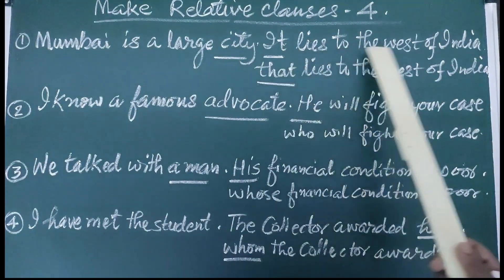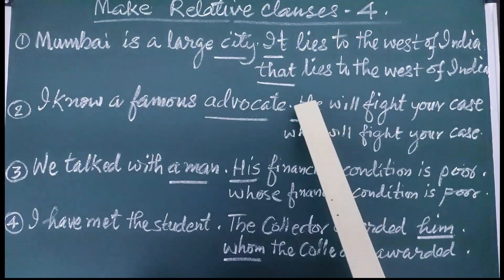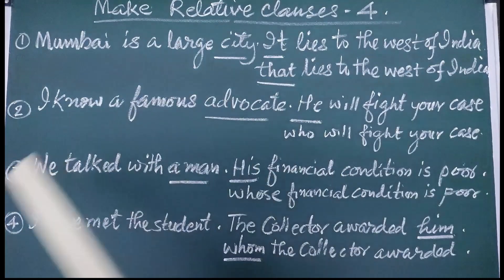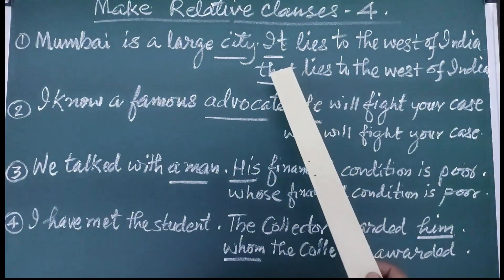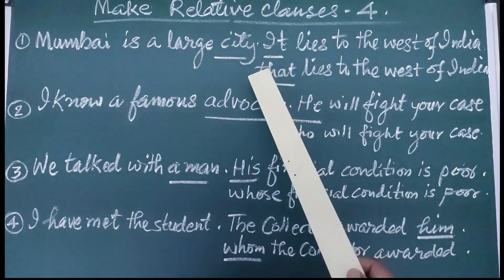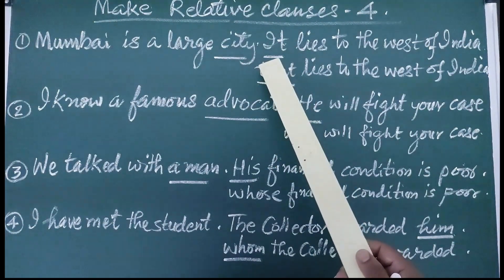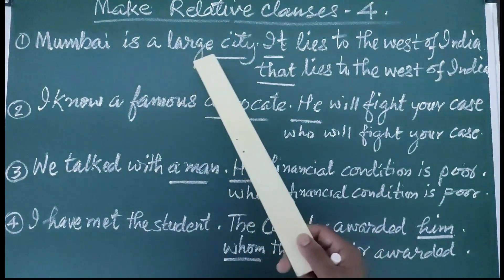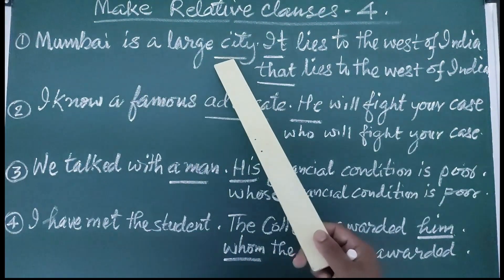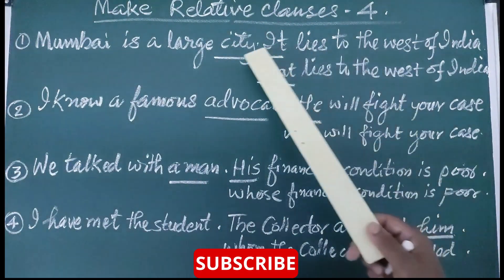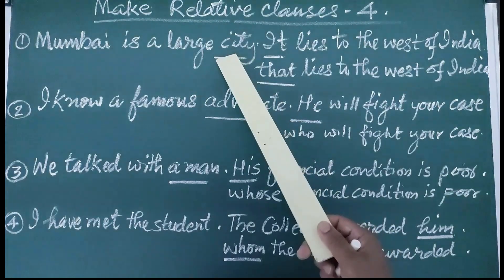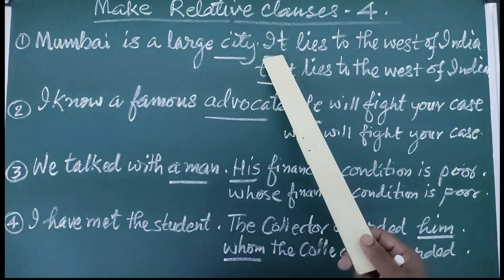Mumbai is a large city. It lies to the west of India. The first thing we have to do is identify the co-relatives in these two sentences. Co-relatives means the same nouns or pronouns present in both sentences. In the first sentence, there is a mention of Mumbai. In the second sentence, Mumbai or city is replaced by the word 'it'. So here a noun is used and here a pronoun is used — these two are the co-relatives.